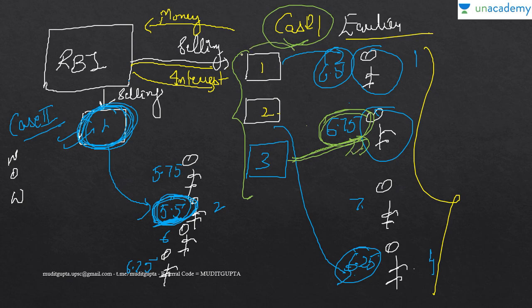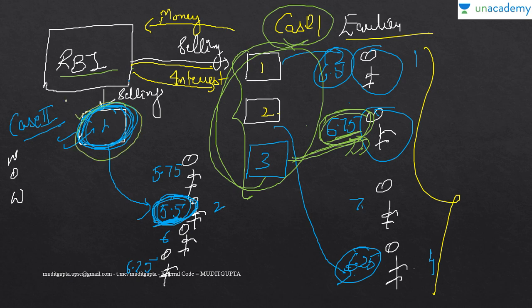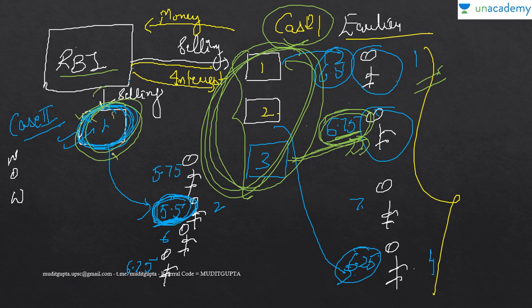When the number of securities in the market is increased, bond yield increases because RBI needs money and people demand higher returns. Conversely, when supply of securities is reduced, the bond yield goes down.